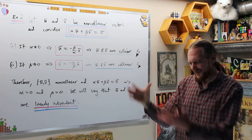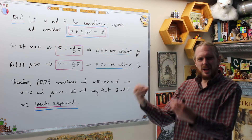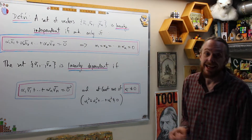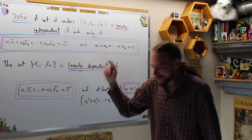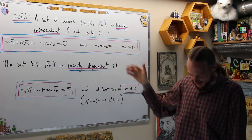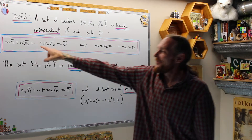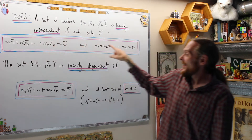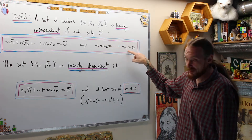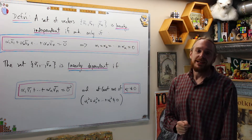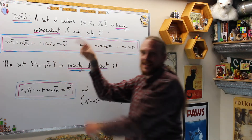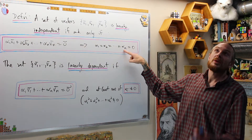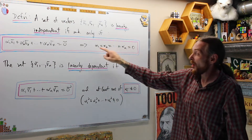Let's give the general definition. A set of vectors v₁ to vₙ is called linearly independent if and only if: whenever zero is written as a linear combination of v₁ to vₙ, the only way to do that is if all those coefficients are zero. There's an if-then inside the if-then. They're linearly independent if this condition implies the only solution is all coefficients equal to zero.